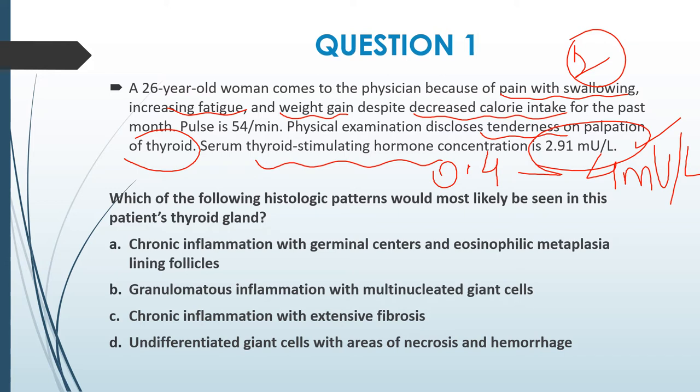The type of hypothyroidism here is De Quervain's, also known as subacute granulomatous thyroiditis — pain is a hallmark of De Quervain's. Histologically, the name itself suggests granulomatous inflammation with multinucleated giant cells. So the answer to this question is B.